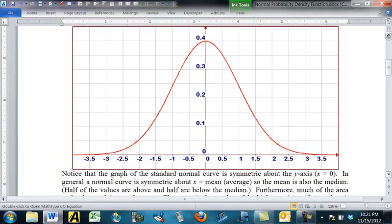Some characteristics that this has: it's symmetric about the y-axis here. That's also the value of the mean, and it's also the mean because it's the balance point. If we were to fill this area up here, it would balance out right there. There's half of it to the left and half of it to the right, so that also makes it a median.